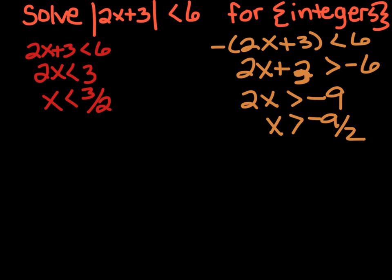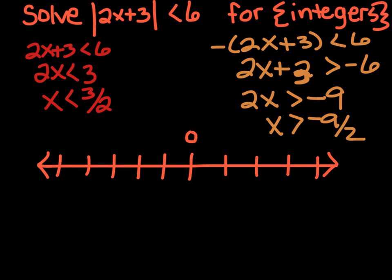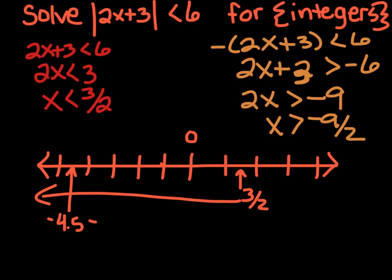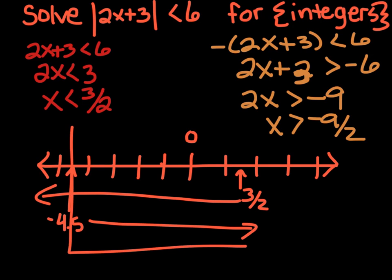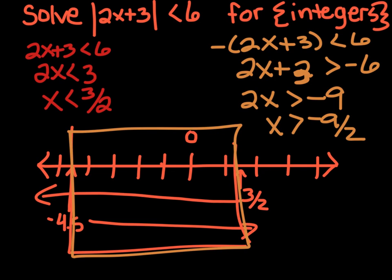Now we're going to put this on a number line. 3 halves is 1.5, right about there. I have less than that, so I shade everything to the left. We also want greater than negative 9 halves, which is negative 4.5. Greater than that. So our result is in the area that is overlapped. Recall that we are only going to answer this problem with the integers that are in that box. Even though it's negative 4.5, that's not an integer, so it doesn't count.